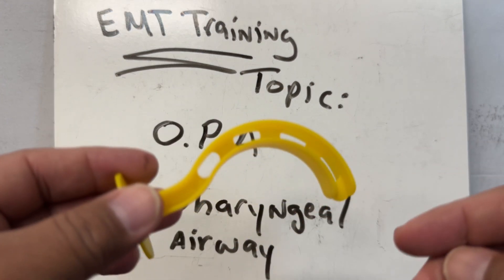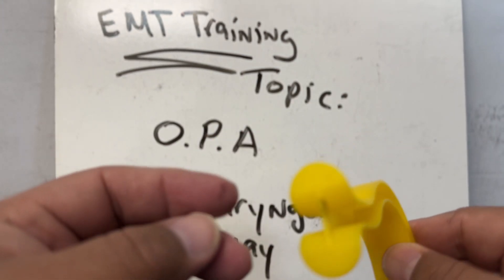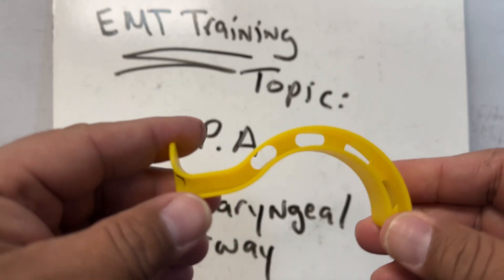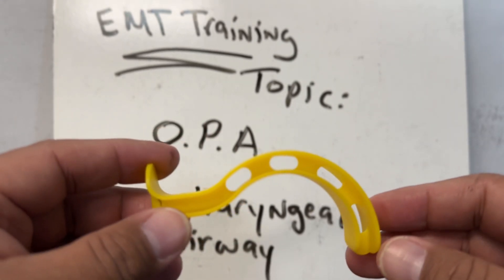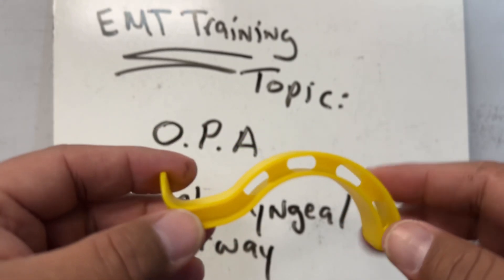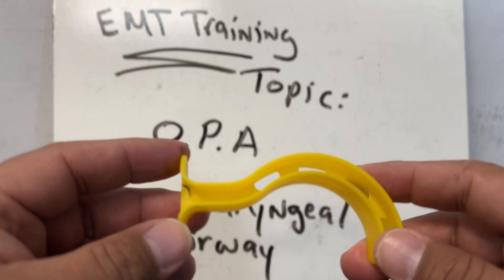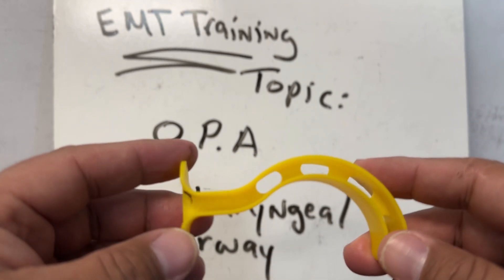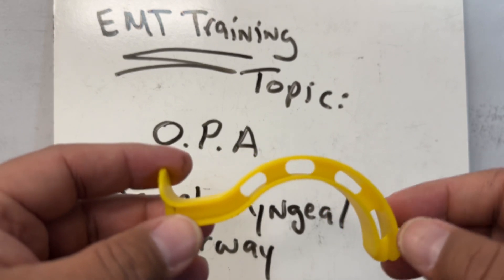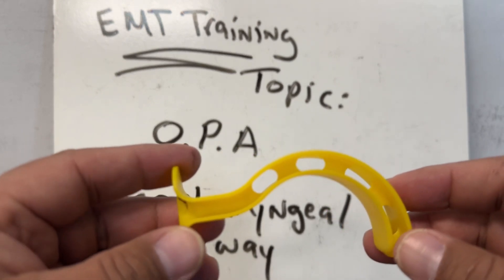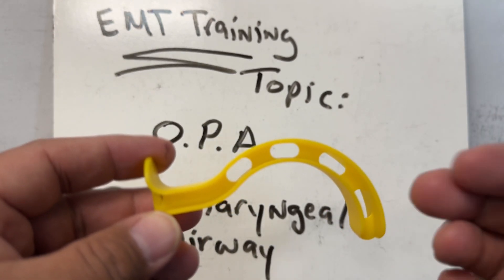Here is one type of OPA. Notice the curvature — we'll talk about the different parts. This curvature is where the tongue is located, allowing it to be moved.